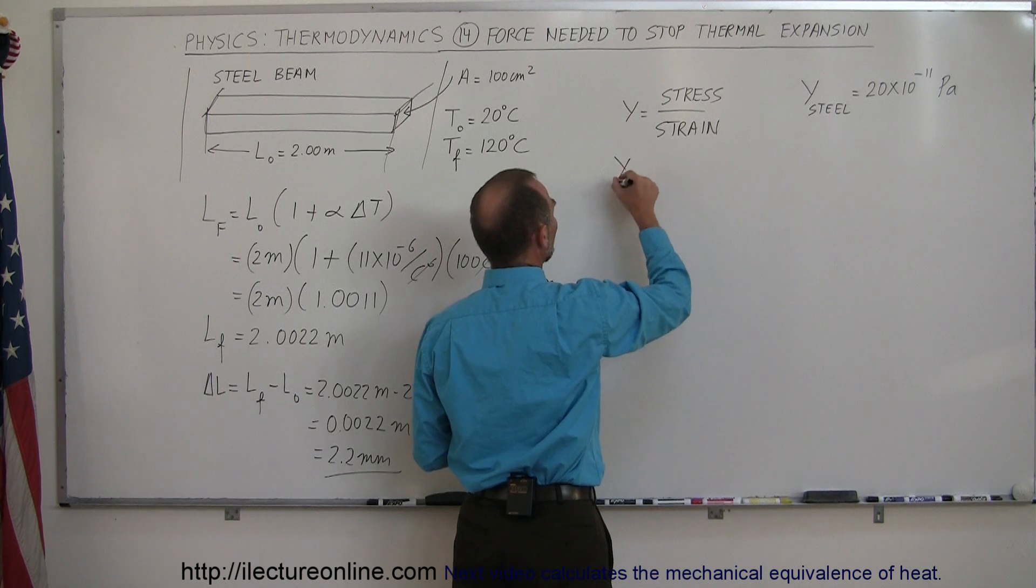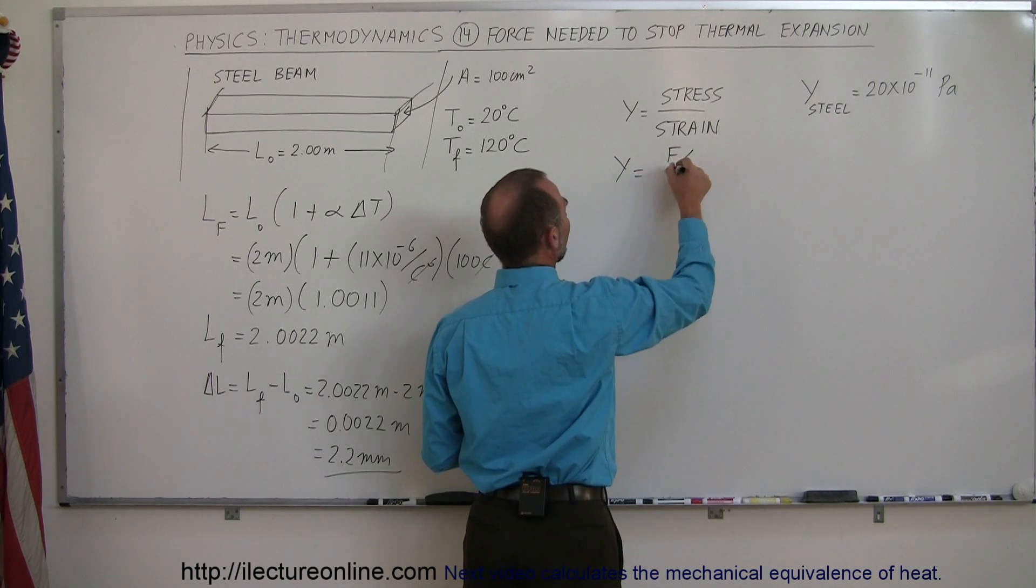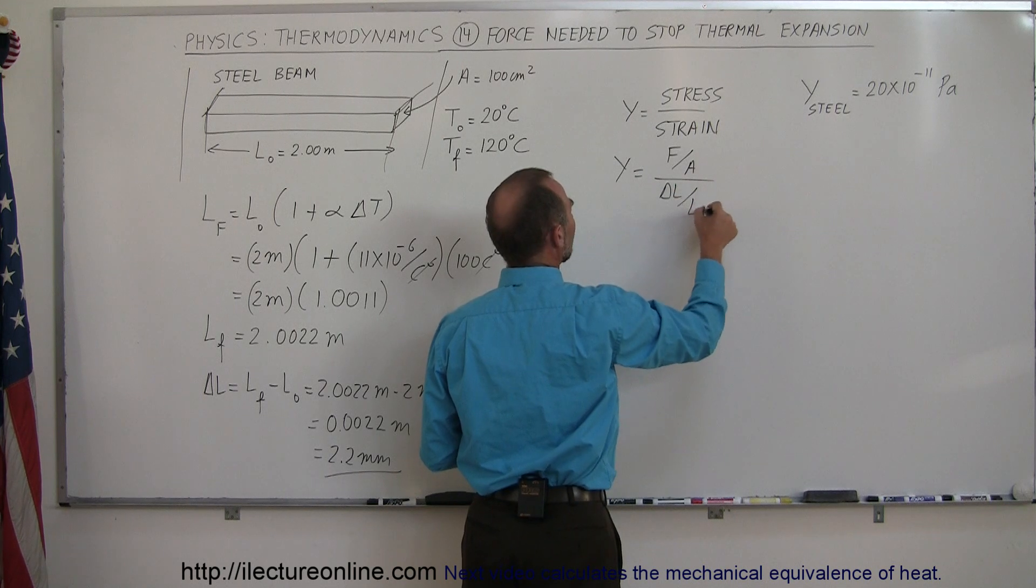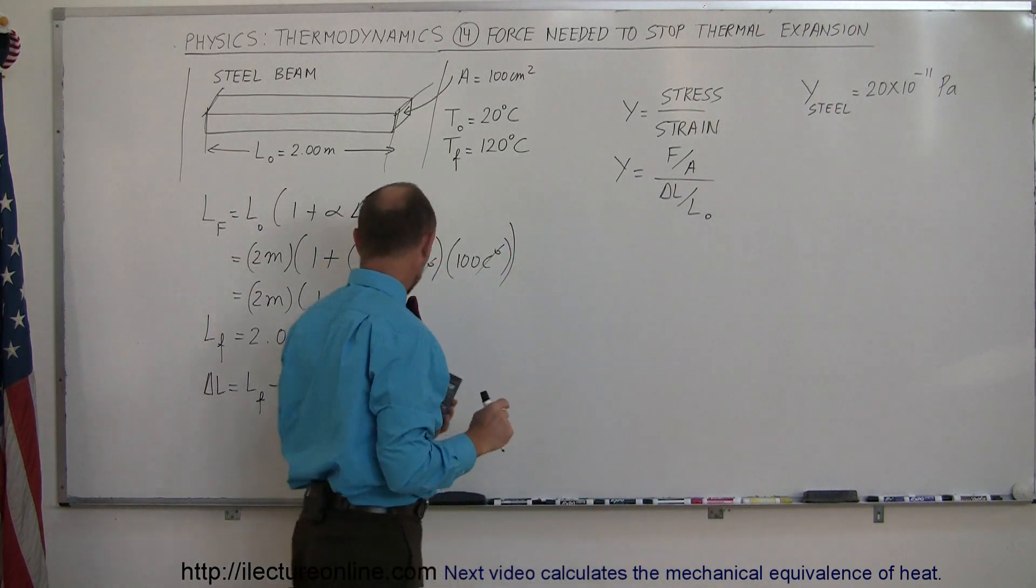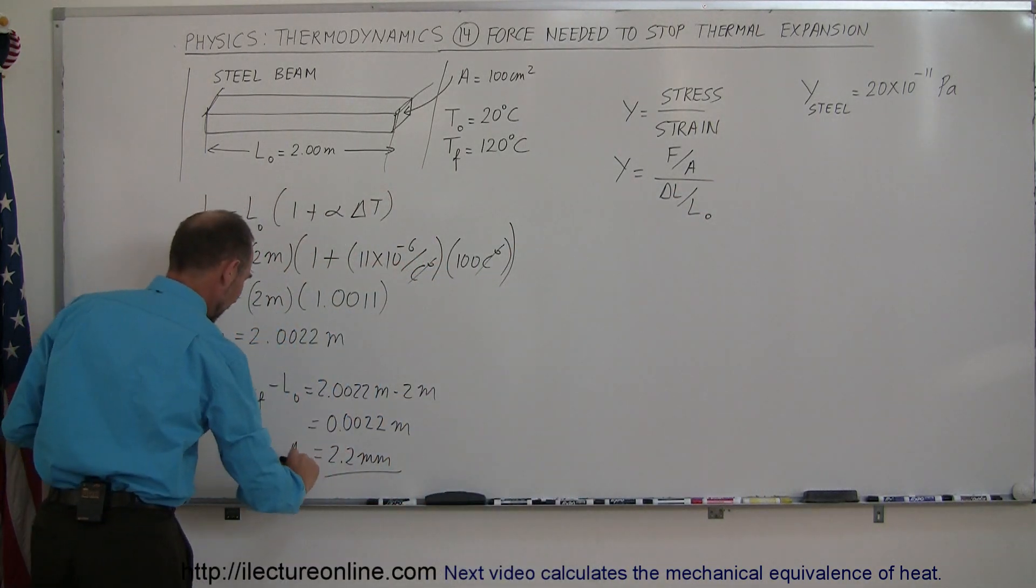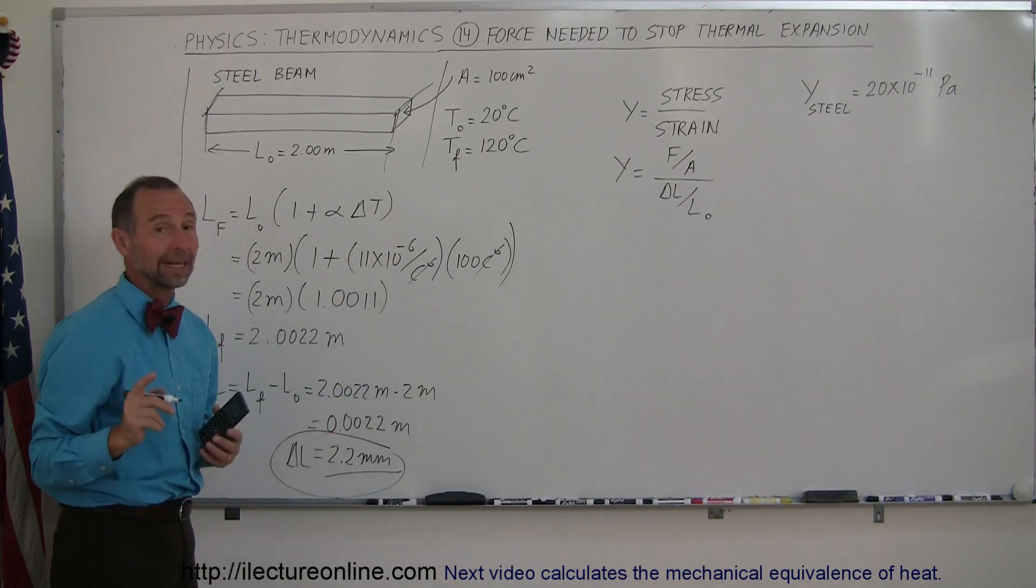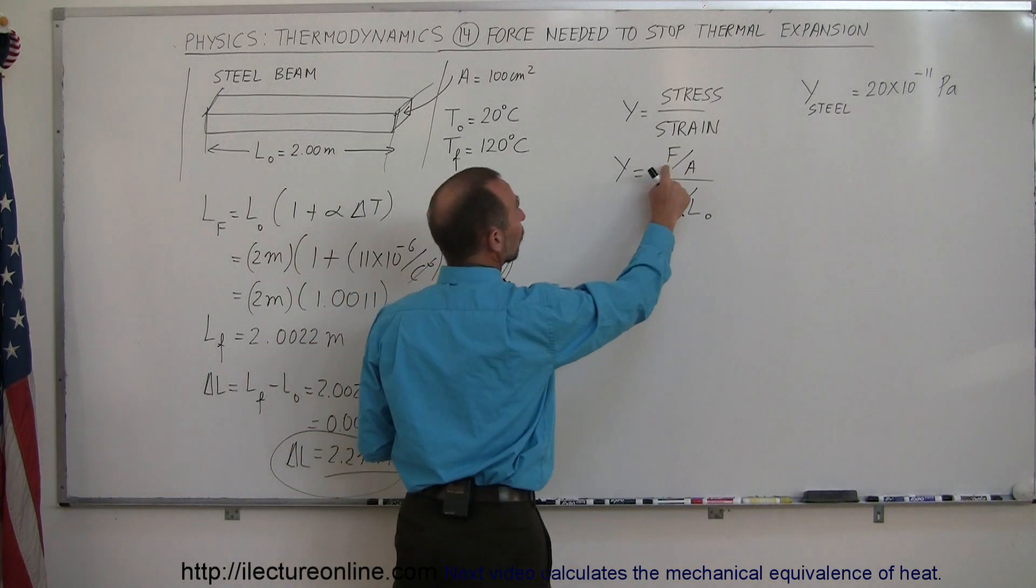The stress by definition is equal to force divided by the cross-sectional area. The strain is equal to delta L over the original length. Delta L is what we found over here, and what we're looking for is the force in this equation.